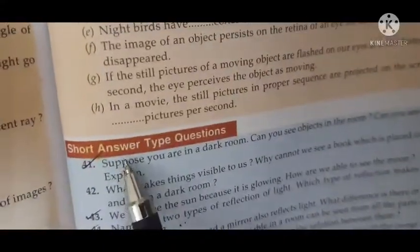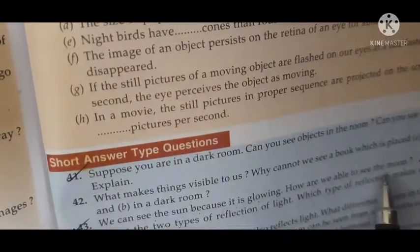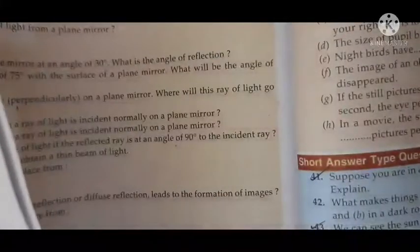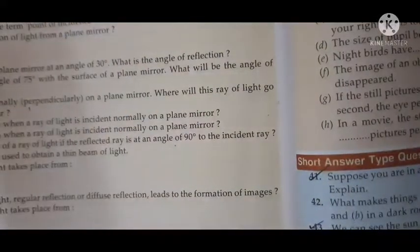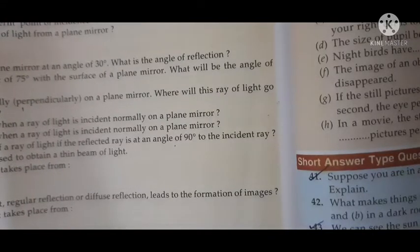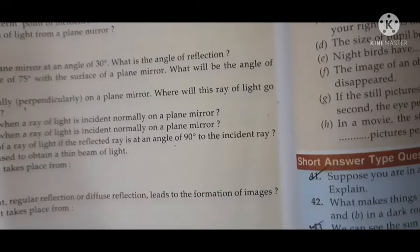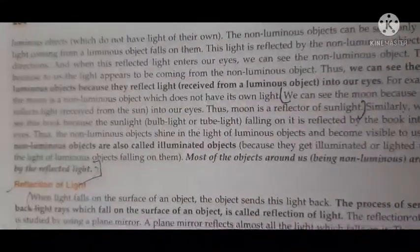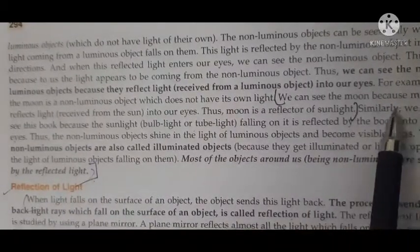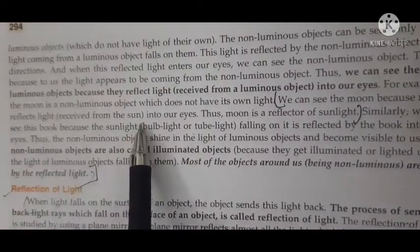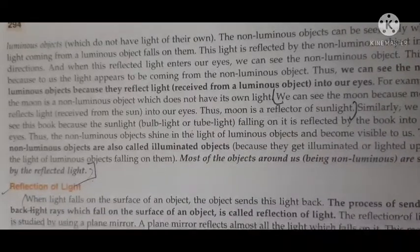Short answer question: We can see the sun because it is glowing — how are we able to see the moon? Open page number 294. The moon doesn't have its own light; it reflects the light rays that fall on it from the sun, and that reflected light enters our eyes. The accurate answer: we can see the moon because the moon reflects light received from the sun into our eyes — thus, the moon is a reflector of sunlight.